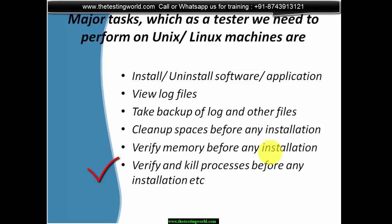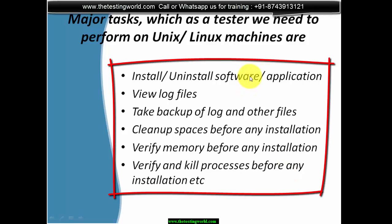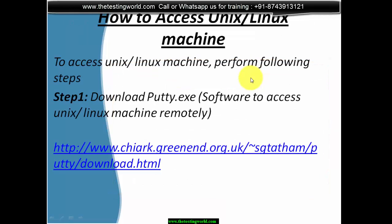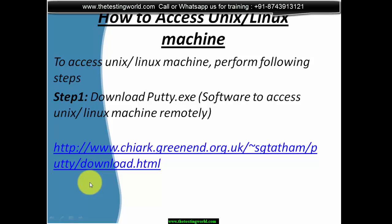On Windows, when a process gets hung we go to Task Manager and kill it - the same can be done on Linux and Unix machines. We check if the process is running and if yes, we can kill it. These are the major tasks we perform on Unix and Linux machines. To access these machines, we need their IP, username, and password, and a small software called PuTTY.